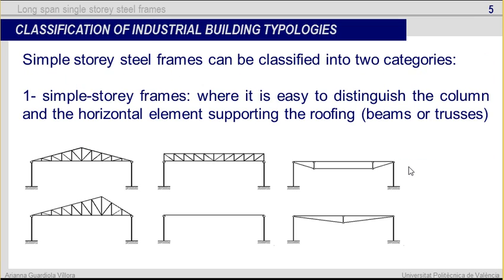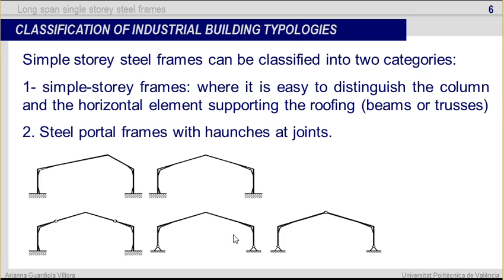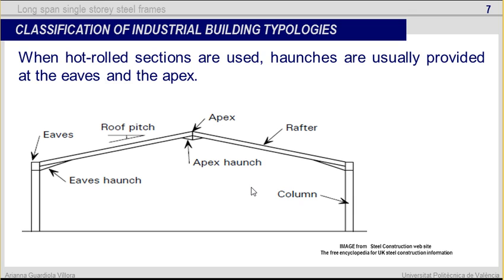Single-story steel frames can be classified into two categories. The first one, single-story frames, where it is easy to distinguish the column and the horizontal element — trusses or beams — supporting the roofing. We also have steel portal frames with haunches at joints. Here are the haunches, and it is not easy to distinguish between horizontal beams and column elements. When hot-rolled sections are used, haunches are usually provided at the eaves and the apex of the frame.